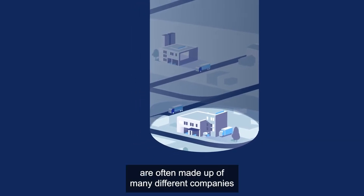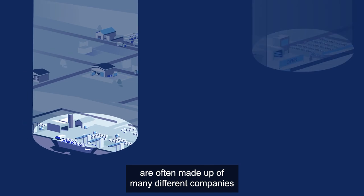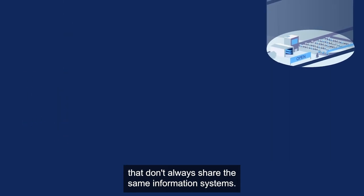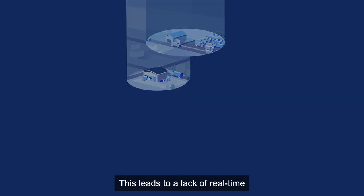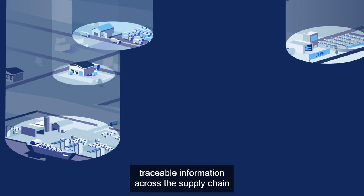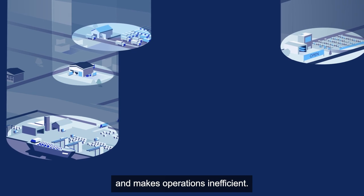Today, supply chains are often made up of many different companies that don't always share the same information systems. This leads to a lack of real-time traceable information across the supply chain and makes operations inefficient.